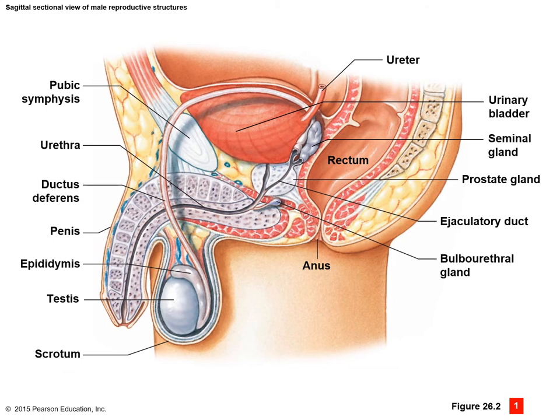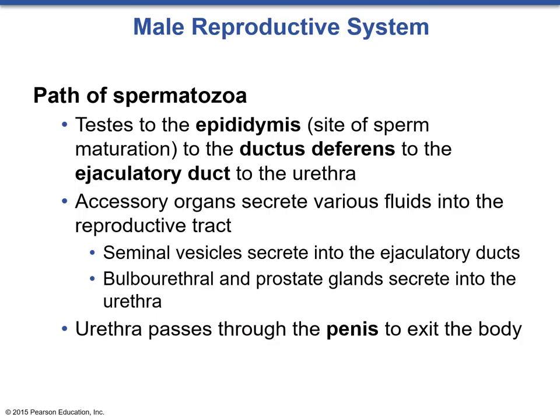Here is a side view where we can see the testes, the epididymis, and as it extends up, the ductus deferens. The ductus deferens comes off to the side slightly as it extends back and around and connects with the prostate gland. We can see the bulbourethral gland and the seminal gland, where all three glands secrete their different components into the overall semen. The pathway of the spermatozoa is: testes to epididymis to ductus deferens into the ejaculatory duct and then out the urethra.